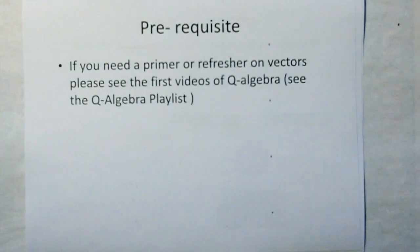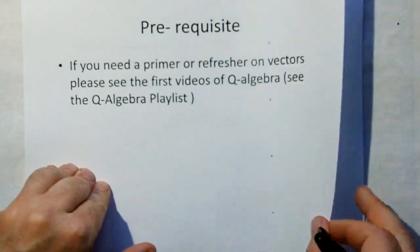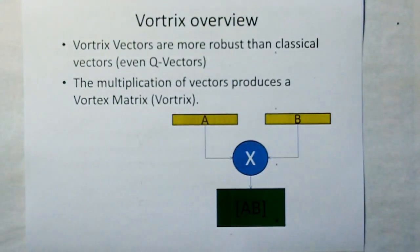As a prerequisite, if you need a primer or refresher on vectors, please see the first videos of Q-algebra. On the YouTube site, there's a playlist. Look under Playlists, and there's a playlist for Q-vectors or Q-algebra. Just start that playlist from the beginning. It'll give you a primer on what vectors are, what matrices are, all that stuff. Probably about 75% of the topic discussion of Q-algebra is going to be the same for Vortrix Algebra.